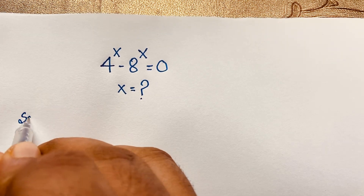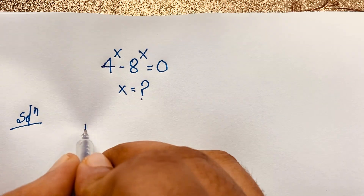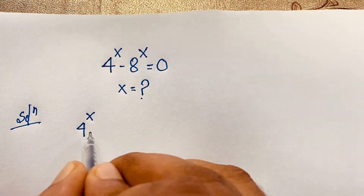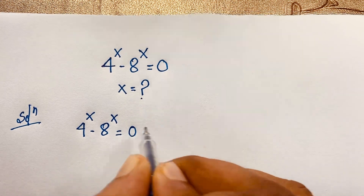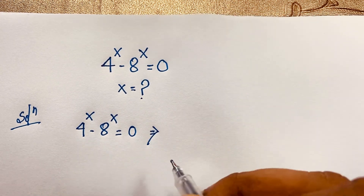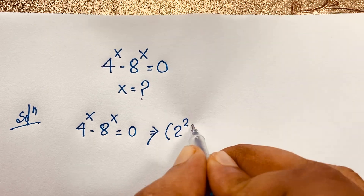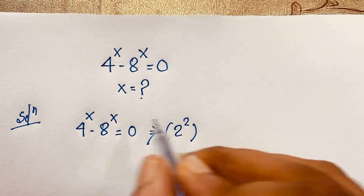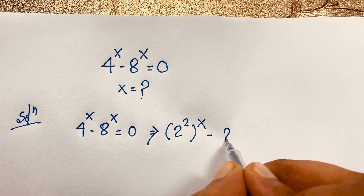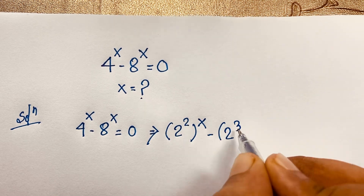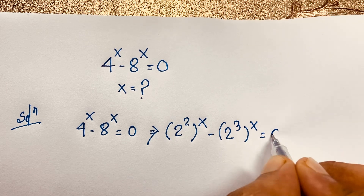I will solve this question using an easy method. Our question is 4 to the power x minus 8 to the power x is equal to 0. Now this 4, you can say it will be 2 to the power 2, bracket to the power x, minus and this 8, it will be 2 to the power 3, then whole to the power x, is equal to 0.